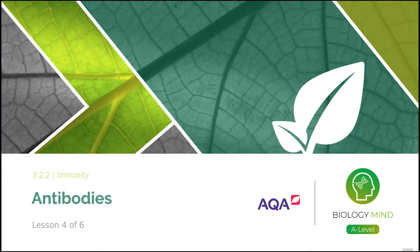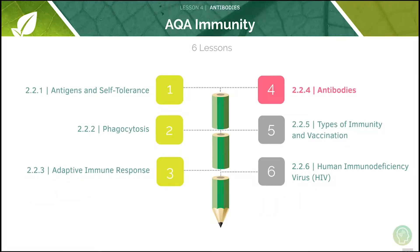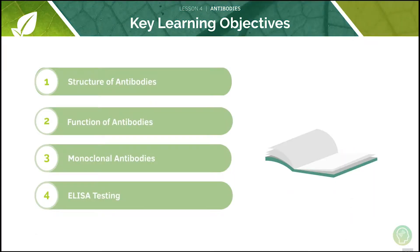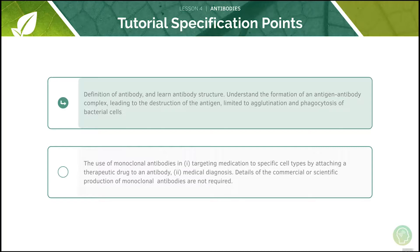Welcome to lesson four of six in this tutorial covering antibodies. This is the fourth video in our series of six lessons on the topic of immunity. In the last lesson we were looking at the adaptive immune response and humoral immunity. Here are the key learning objectives for today's lesson: first we'll be looking at the structure of antibodies, then at their functions. We'll also discuss monoclonal antibodies and finally look at ELISA testing. Here are the AQA specification points for today's lesson — feel free to pause the video now and have a quick read through them before we begin.